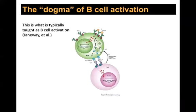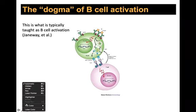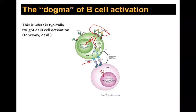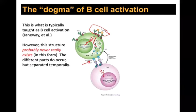This figure from a Nature Reviews Immunology paper shows the textbook dogma of how a B cell gets activated: B cells recognize antigen, internalize it, degrade it via the MHC class II pathway in endolysosomes, and then present the antigen on their surface for T cells. The problem is this one-step process doesn't actually occur — all the steps do occur, but not in one step.